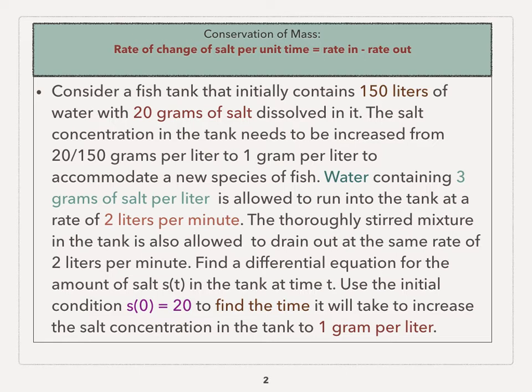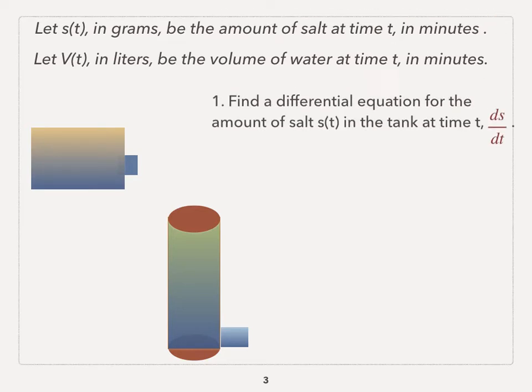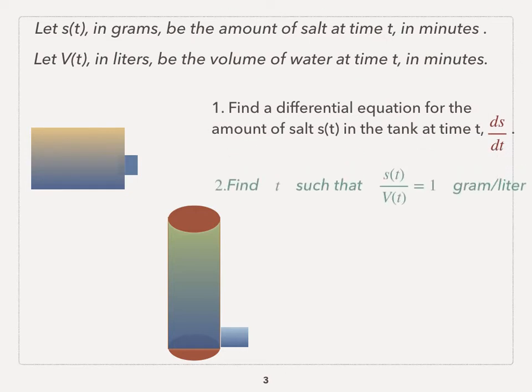For any of these applications, you always want to identify the variables first. Let s(t) in grams be the amount of salt at time t in minutes. Let v(t) be the volume of the water at time t in liters. We'll identify the two questions: first, find ds/dt; second, find t such that s(t) over v(t) equals 1.